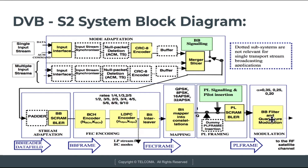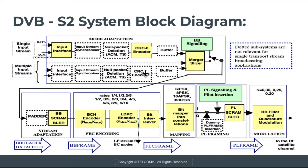The roll-off factor used is 0.35, 0.25, or 0.20. After passing the PL frame through the modulation system, the signal is formed and transmitted to the RF satellite channel. This completes the overview of the DVB-S2 system block diagram.